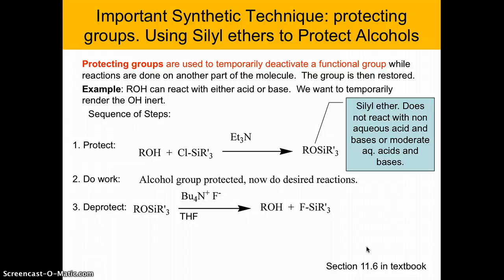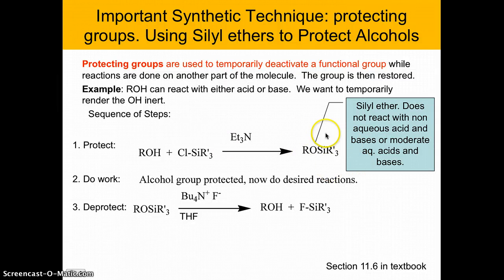One other thing to address: what if our molecule has a group with an acidic hydrogen on it? Since carbon-based nucleophiles are also basic, they can deprotonate instead of acting as a nucleophile. If we have an acidic hydrogen like one on an alcohol and we want to use a nucleophile in its presence, we might need a protecting group. One of the most commonly used protecting groups for alcohols are silyl protecting groups, or silyl ethers, because they're easy to put on, very robust, and easy to remove.